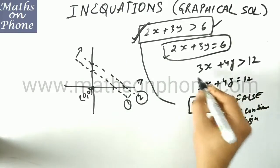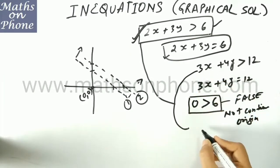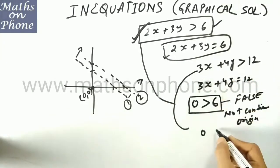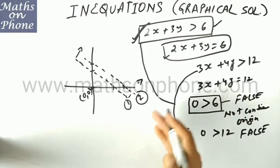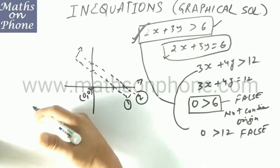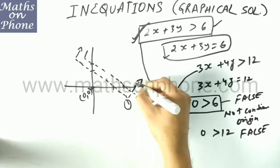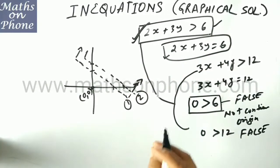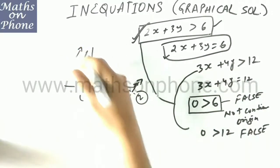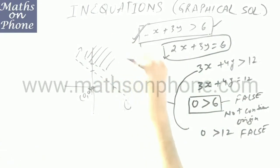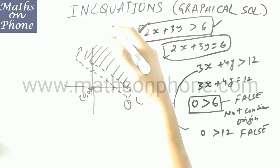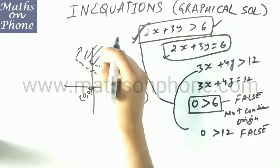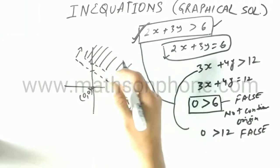Now go for line number 2. The same process we follow: put the coordinates of origin — 0 plus 0 is 0, and 0 is greater than 12. Is it true or false? This is false again. So we have to shade the region not containing the origin. Now, can you tell me which is the common region? The region satisfying both conditions — this will be the common region. This region is satisfying both conditions: it is upward of line 1 and upward of line 2. You have to shade this common region in the given inequations.